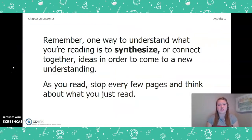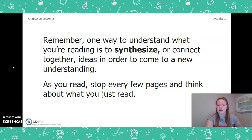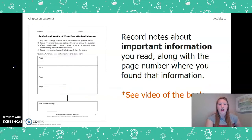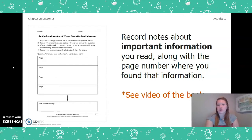Remember, one way to understand what you're reading is to synthesize, or connect together ideas, in order to come to a new understanding. As you read, stop every few pages and think about what you just read. You are going to record notes about important information along with the page number where you found that information, using page 37 of your Ecosystem Restoration Workbook or page 4 of your Chapter 2 Lesson 2 Activity Packet.